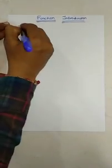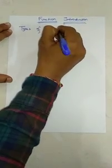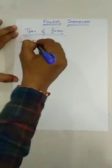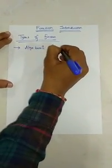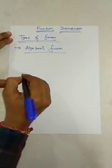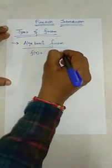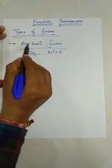Hello friends, today's topic is function. So let's start with the introduction of that. First of all, the types of function. Now first thing is when you can say it is algebraic function. So if I write f(x) = 3x² + 5, then this type of function is called algebraic function.